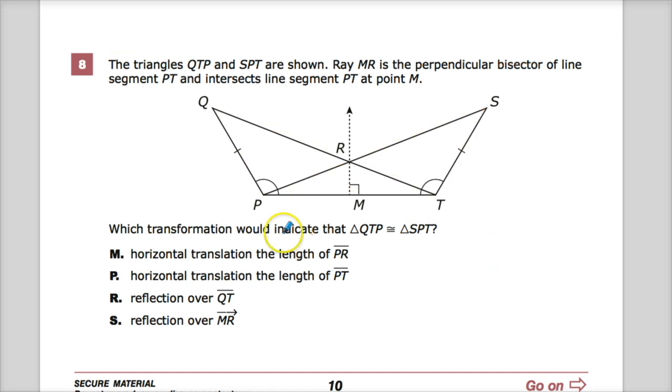Which transformation would indicate that triangle QTP is congruent to? This symbol means congruent, means they're the same. They have the same values all the way through. And if it was just this, that would be similar. That would be, they would have the same angles but proportional sides. That's not what we're talking about here. We're talking about full congruence.